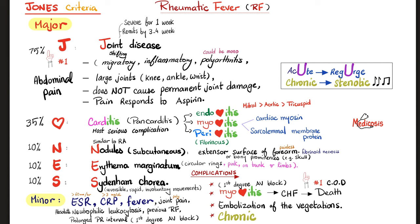Carditis is the most serious complication, though not the most common. It involves endocarditis, myocarditis, and pericarditis. Endocarditis affects the valves: the mitral valve is most commonly involved, then the aortic, then the tricuspid. In acute rheumatic fever, valvular disease presents as regurgitation (mitral regurgitation), while in chronic rheumatic fever it becomes stenotic. Myocarditis involves attack on cardiac myosin and sarcolemmal membrane proteins. Pericarditis is usually fibrinous and may present with a friction rub.